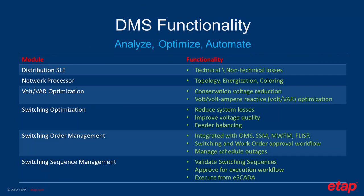In distribution, standout applications include distribution state estimation, where you can determine technical and non-technical losses. The network processor analyzes the topology, coloring the system based on energization and voltage levels. The Volt/VAR optimization (VBO) provides conservation voltage reduction and reactive power optimization, maintaining your voltage levels while determining the dispatch of reactive power resources. The switching optimization allows you to reduce system losses, improve voltage quality, and achieve feeder balancing through optimization of the system topology.